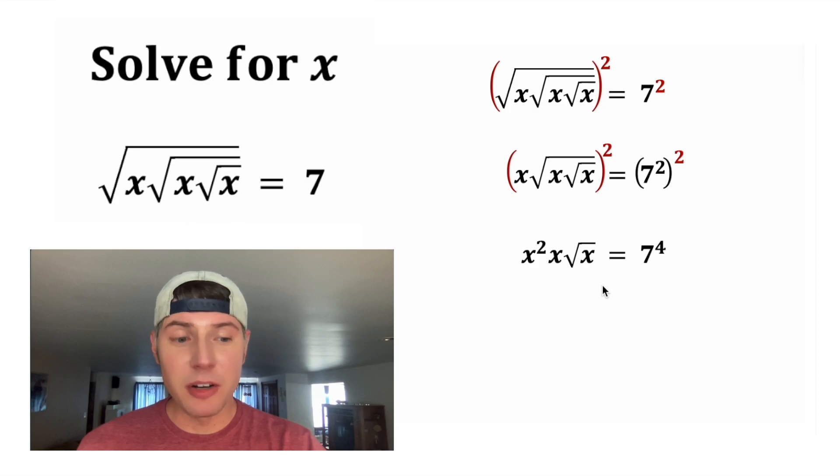So we have one more square root to get rid of. So let's square both sides of the equation. This square is going to go to all three of these. The x squared will become x to the fourth. The x will become x squared. And the square root of x squared is going to give us x.